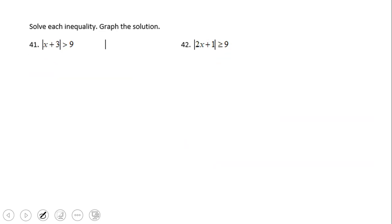Now, let's take a look at the other type of absolute value inequality, the one that works with greater or greater or equals. Both of them work the same way. So let's see number 42.